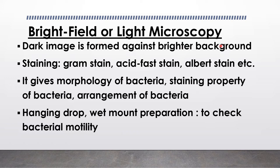In bright field or light microscopy, a dark image is formed against a brighter background. We use a lamp or sunlight as a source of light, focused via a mirror. In this microscopy, we can visualize both stained and unstained preparations. Among unstained preparations, hanging drop and wet mount preparations can be done to examine bacterial motility, presence or absence of bacteria, and presence of various parasites and their cysts.